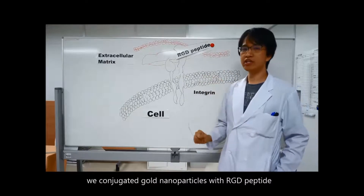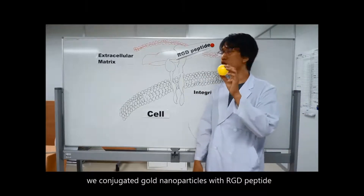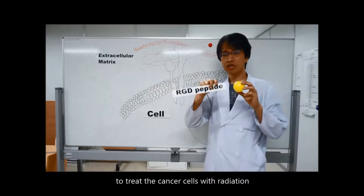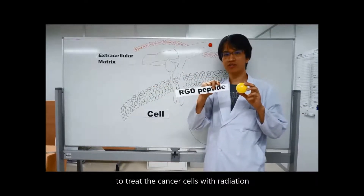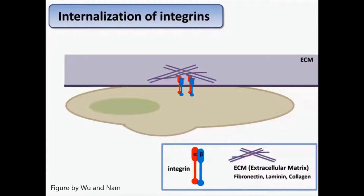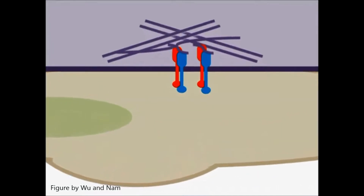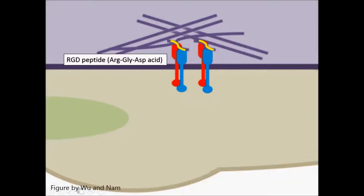To target this kind of cell in our study, we conjugated gold nanoparticles with RGD peptides to treat the cancer cells with radiation. Integrins connect the extracellular matrix by binding with fibronectin, and the binding site of fibronectin to integrins is the RGD peptide.